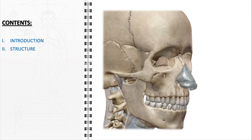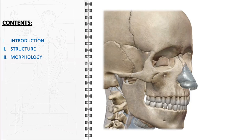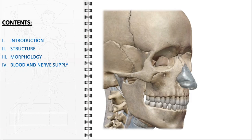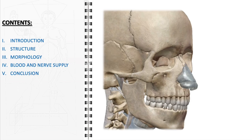Following the structural analysis, we'll shift our focus to the morphology of the nasal pyramid. Next, we will delve into the vital aspects of the blood and nerve supply. Additionally, we'll discuss the nerve supply, particularly the sensory and motor innervation. Finally, we'll conclude with key takeaways summarizing the major points discussed.